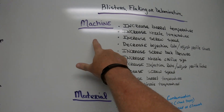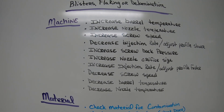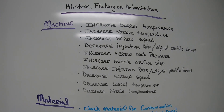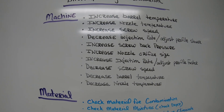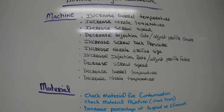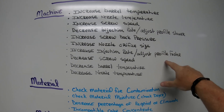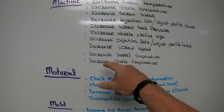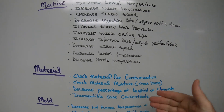On the machine side: increase barrel temperature, increase nozzle temperature, increase screw speed, decrease injection rate or adjust the profile. If you have a profile setting for your speeds, adjust that. Also increase screw back pressure, increase nozzle orifice size, and increase injection rate — adjust the profile faster. Note that up here it says make it slower, down here says make it faster. You can also decrease screw speed and decrease barrel temperature — so if it doesn't work one way, go the other way.